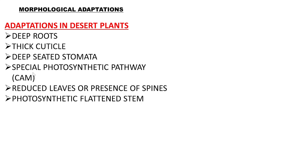Desert plants have reduced leaves or absence of leaves, which are replaced by spines — tiny, pointed spike-like structures — thereby eliminating transpiration from leaves. Their stems are flattened so that photosynthesis can take place through the stem, and flattening increases the exposed surface area to the sun since leaves are absent. These are the key adaptations found in xerophytic or desert plants.